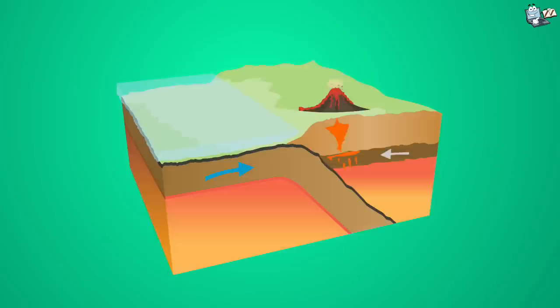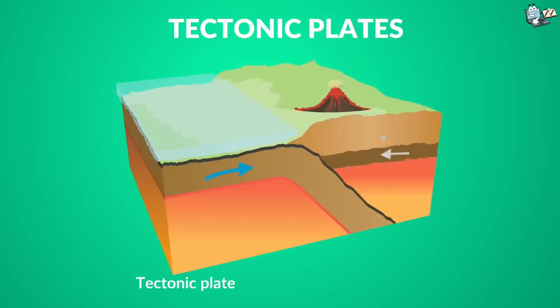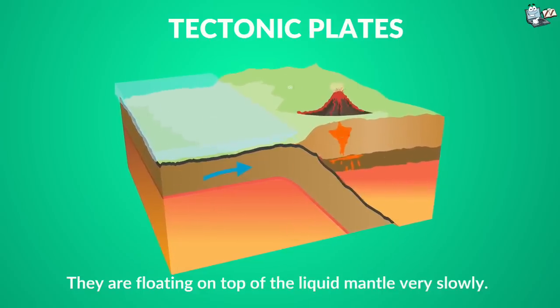One more thing. Tectonic plates. The tectonic plates are a combo of the outer mantle and the crust. These plates move very slowly. You can say around a couple of inches a year.